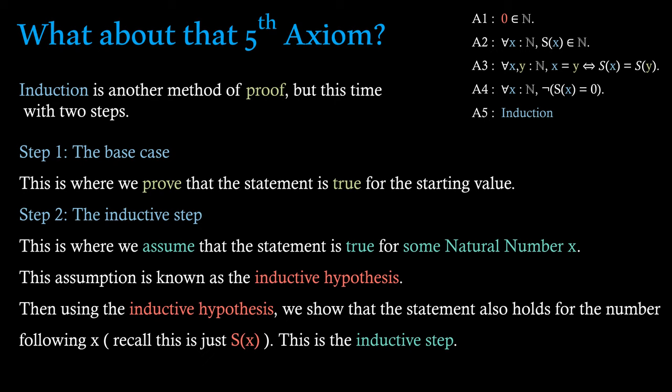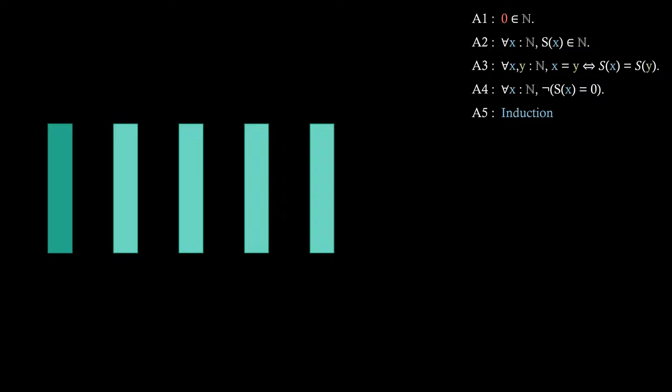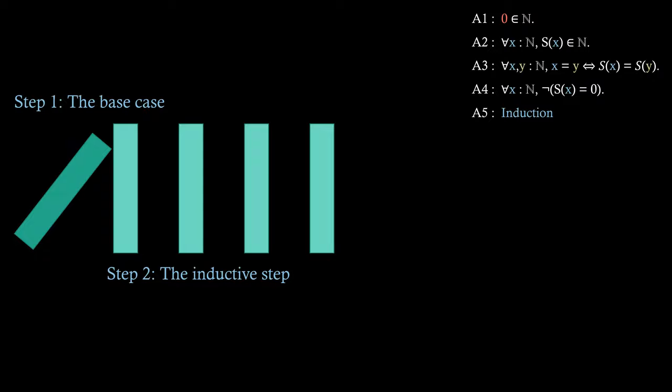The idea of induction is better visualised. Think of it as dominoes. If we call the first domino the base case, and all the ones following it the inductive step, then proving that first case and toppling that first domino over causes the rest to topple as well — because we proved it happens for each successive value.